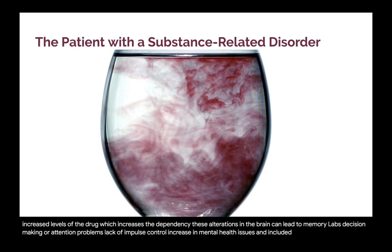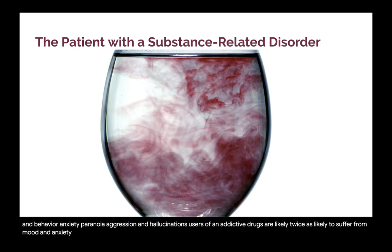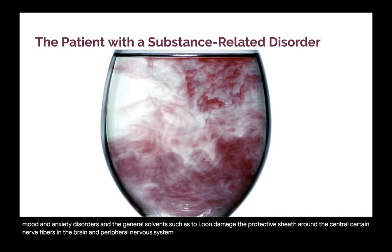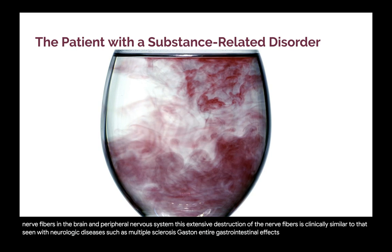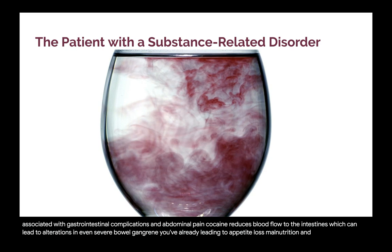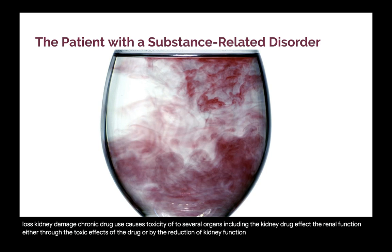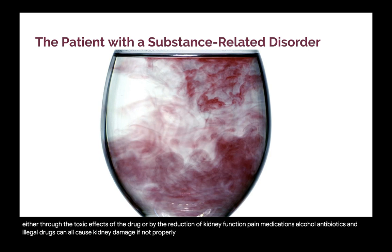Mental health issues from drug abuse include depression, suicidal thoughts and behavior, anxiety, paranoia, aggression, and hallucinations. Users of addictive drugs are likely twice as likely to suffer from mood and anxiety disorders than the general population. Chronic abuse of volatile solvents such as toluene can damage the protective sheath around certain nerve fibers in the brain and peripheral nervous system, clinically similar to neurologic diseases such as multiple sclerosis. Gastrointestinal effects: cocaine in particular has been associated with gastrointestinal complications and abdominal pain; cocaine reduces blood flow to the intestines, which can lead to ulcerations and even severe bowel gangrene. Many drugs of abuse cause nausea, vomiting, appetite loss, malnutrition, and significant weight loss. Kidney damage: chronic drug use causes toxicity to several organs including the kidney, affecting renal function through toxic effects or reduction of kidney function.